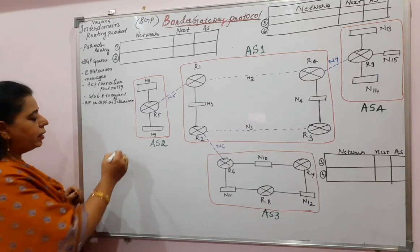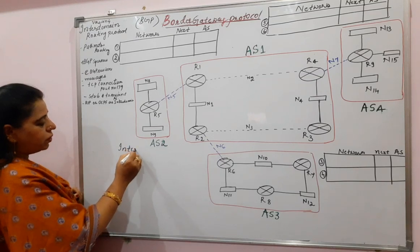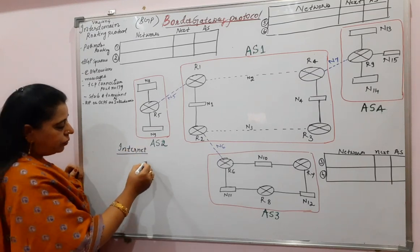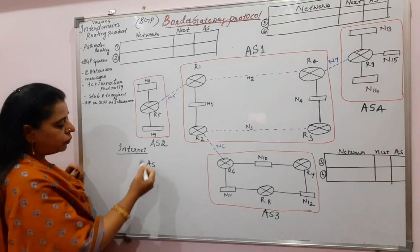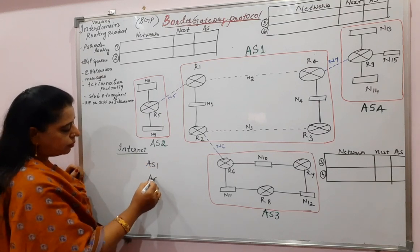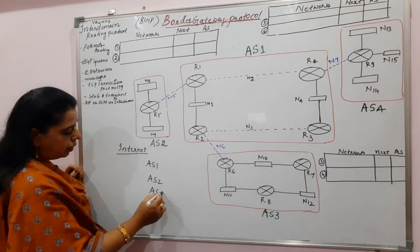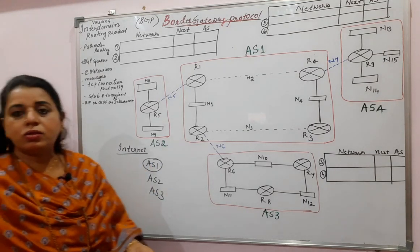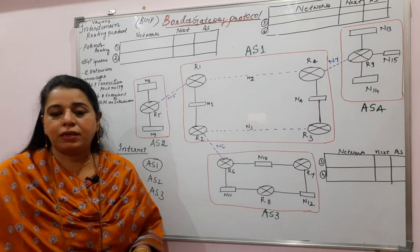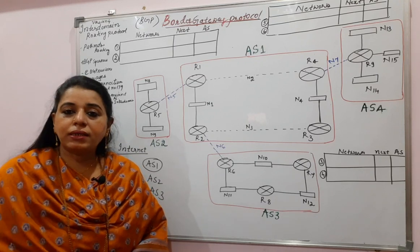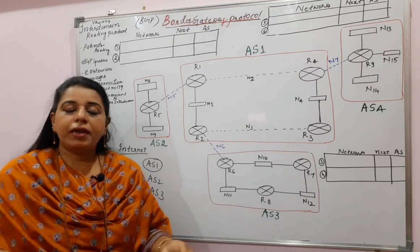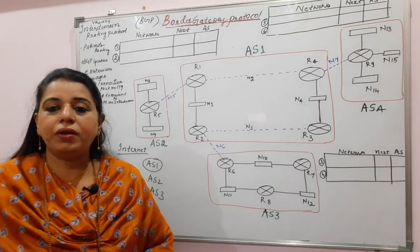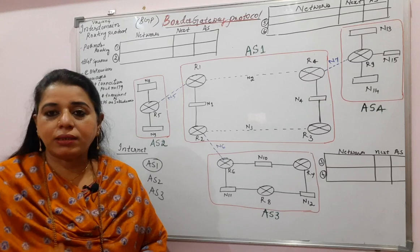The complete internet is divided into different autonomous systems. You can give names like autonomous system 1, 2, 3. Each autonomous system consists of smaller networks — a group of networks which are handled by one single administrator. Because it is very difficult to manage the entire set of networks in the internet, it is divided into autonomous systems, each under one single administration.